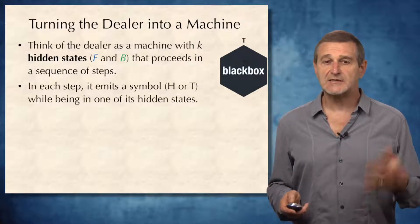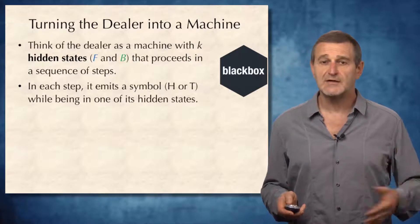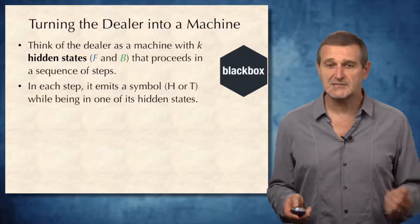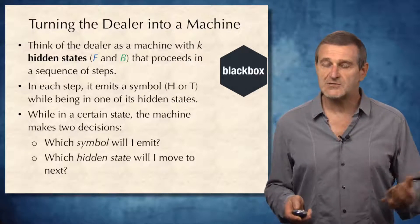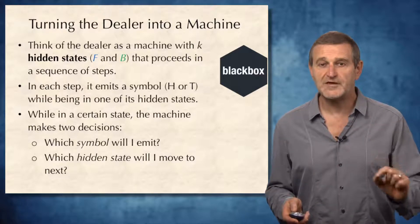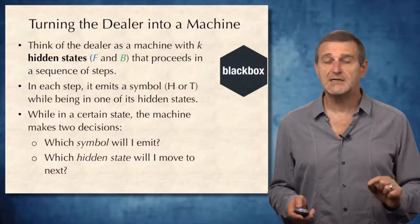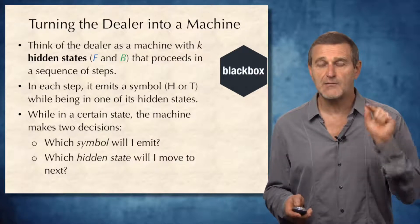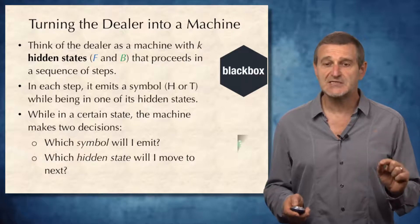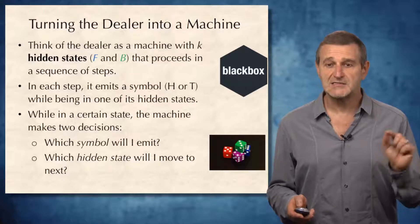At each step, the machine emits one of the symbols from the alphabet. In the case of coin flipping, the symbols the machine emits will be heads or tails. While in a certain state, the machine makes two decisions: which symbol will I emit, and which hidden state will I move to next? It uses probabilistic arguments to make these two decisions.